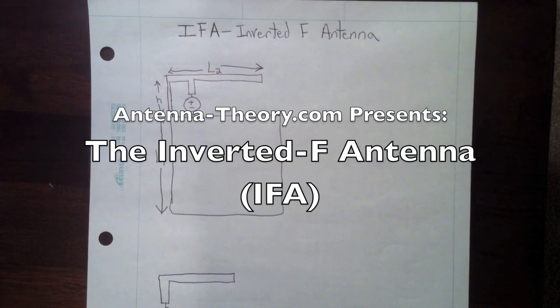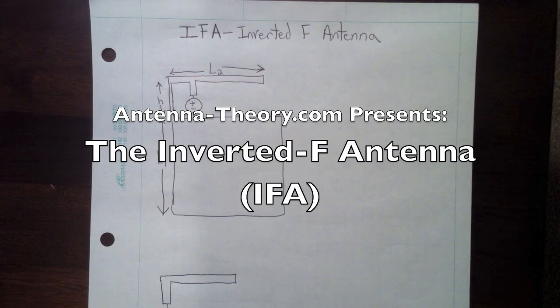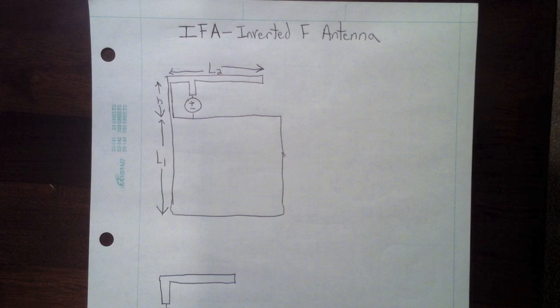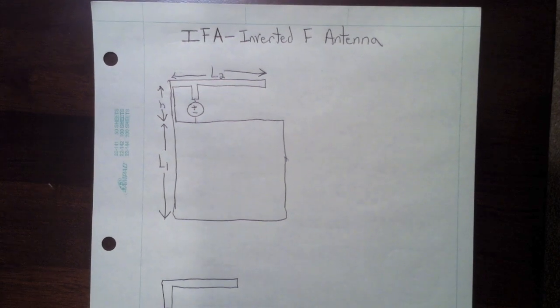So here is the IFA which is the inverted F antenna. I want to discuss that and explain why this is an antenna and why it radiates.